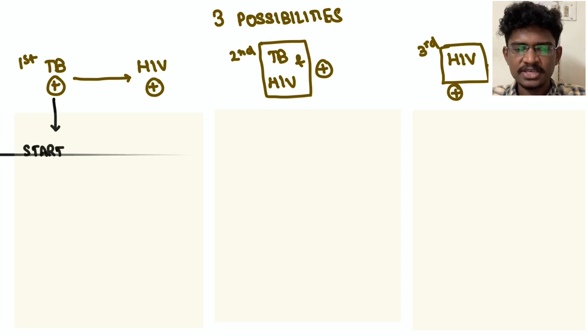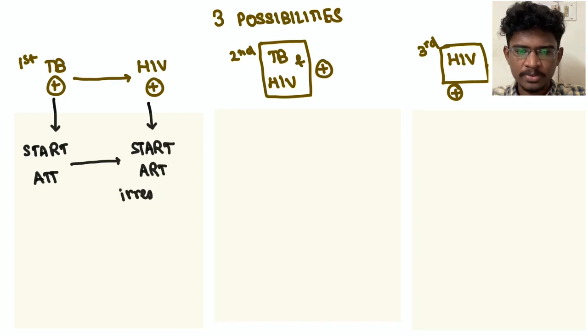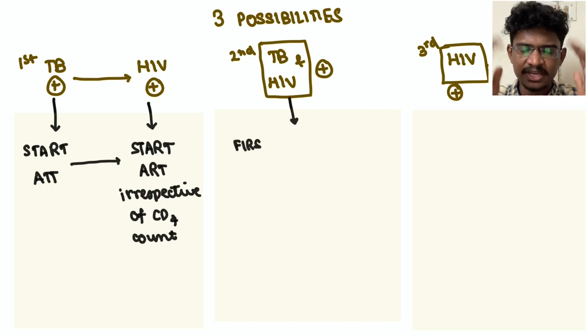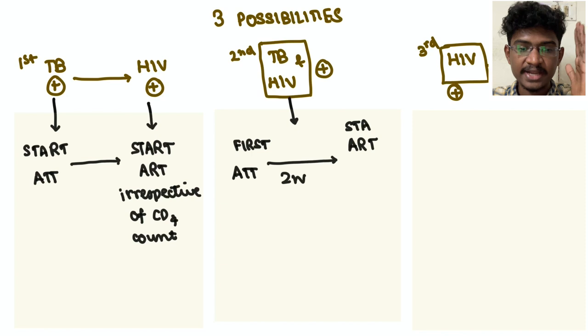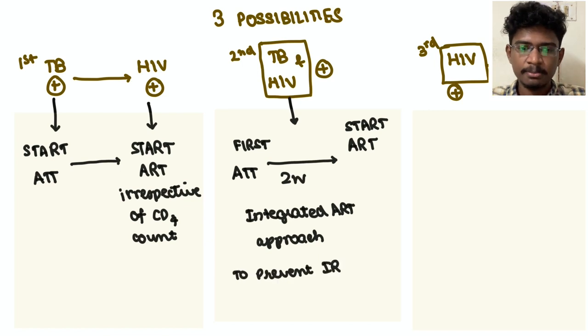And when he develops HIV, obviously start with ART irrespective of CD4 count. Next possibility: if the patient is developing HIV and TB simultaneously, then here you should first initiate anti-tubercular therapy, then wait at least for two weeks. The time cutoff actually is two to eight weeks, but at least for two weeks you should wait and then you should start ART. Because if you start together or if ART starts initially or simultaneously, our immune cells will be activated and this will result in complicated syndrome known as IRIS, immune reconstitution inflammatory syndrome.